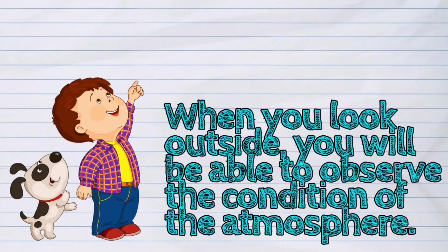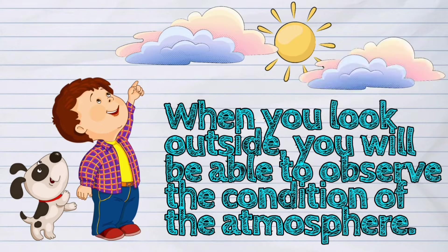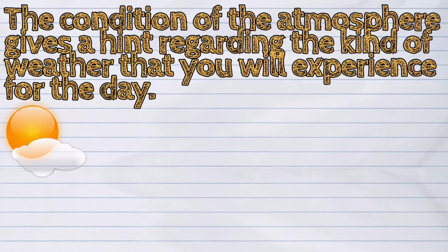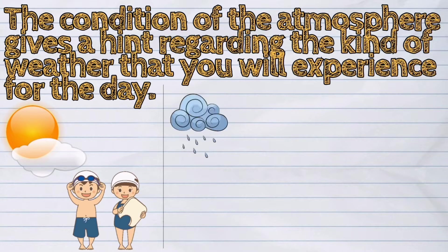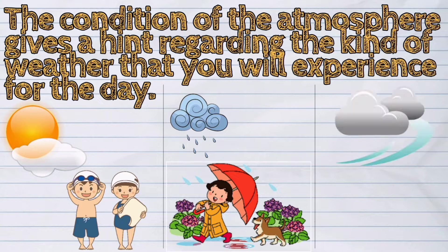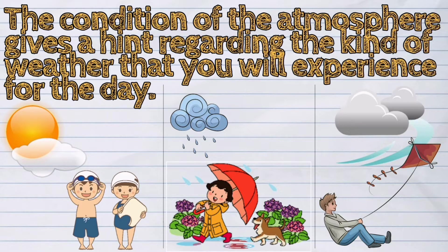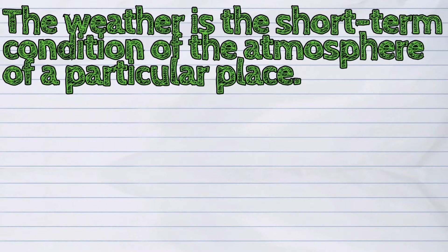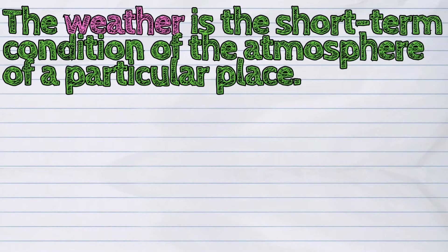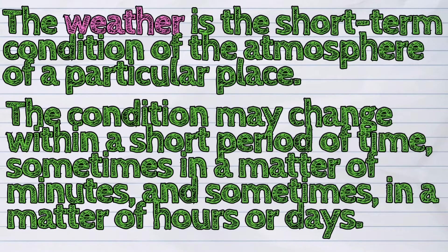When you look outside, you will be able to observe the condition of the atmosphere. The condition of the atmosphere gives a hint regarding the kind of weather that you will experience for the day. Weather is the short-term condition of the atmosphere of a particular place. The condition may change within a short period of time, sometimes in a matter of minutes and sometimes in a matter of hours or days.